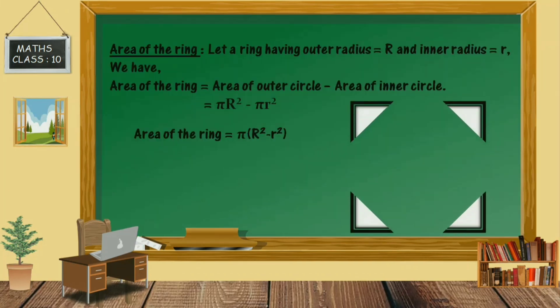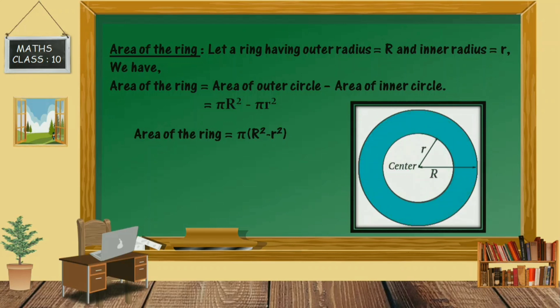Next is the area of a ring. Consider a ring having outer radius R and inner radius r. The area of the ring equals the area of the outer circle minus the area of the inner circle, that is πR² − πr², which equals π(R² − r²). That is the area of the ring.